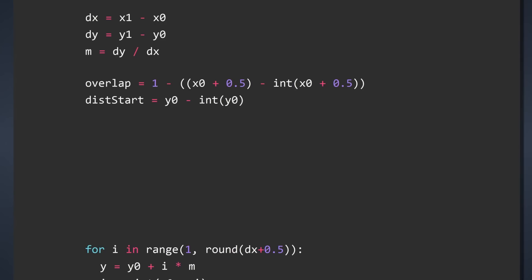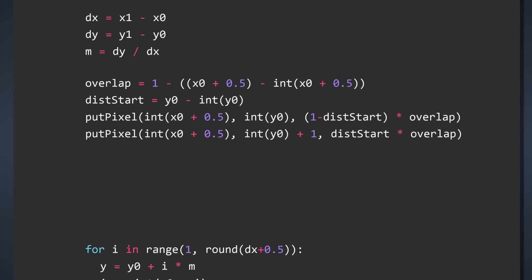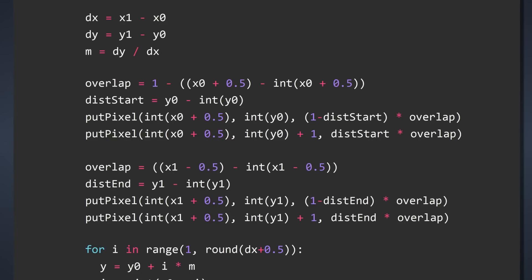Finally, we place our pixels and multiply both distances together to get our final opacity. That's all for the start pixel. Now we do the exact same thing for the end pixel with a slight alteration in the distance calculation.